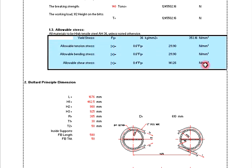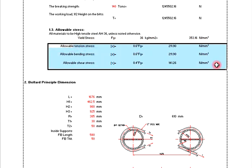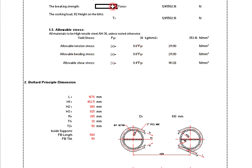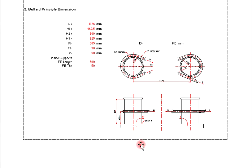Make sure that the result is not more than the allowable tension stress. If it exceeds the allowable strength, you have to change your material, or reduce the breaking strength or the safety working load, or you have to increase the thickness.